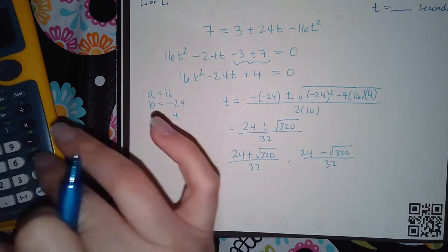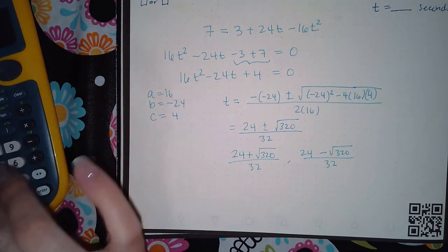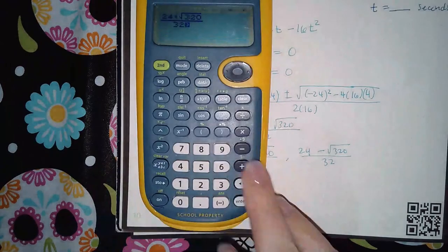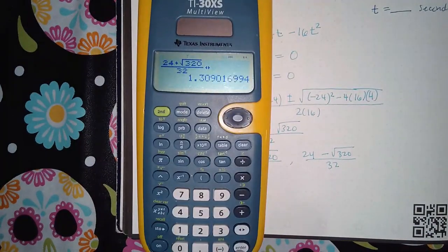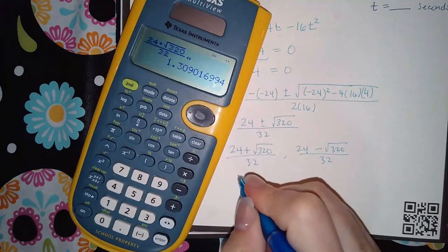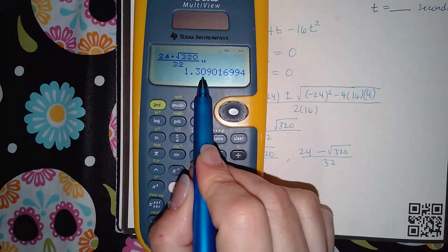Fraction: 24 plus the square root of 320 over 32. And I'm going to go to the side and hit the double arrow so I can get a decimal, and I get 1.31 because that 9 will affect this 0.